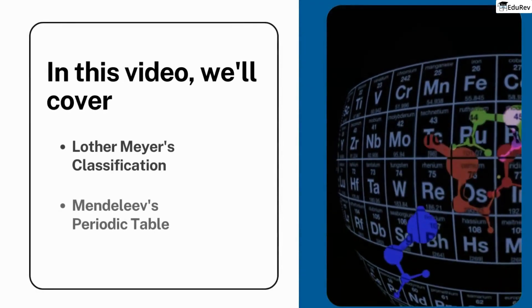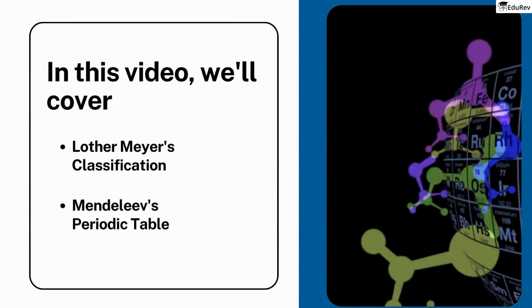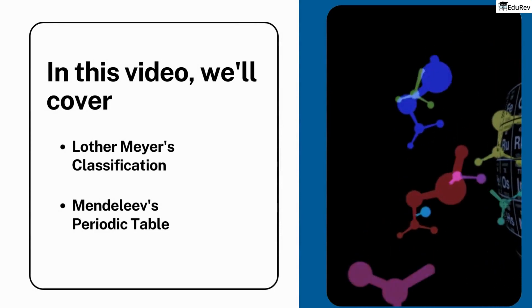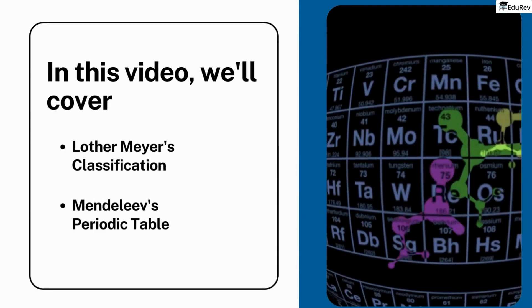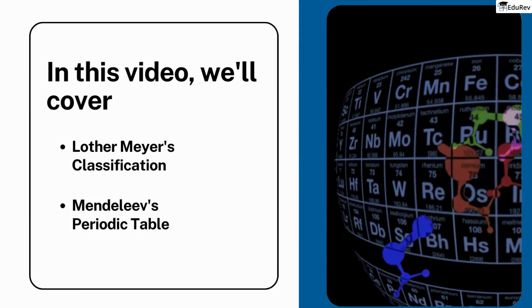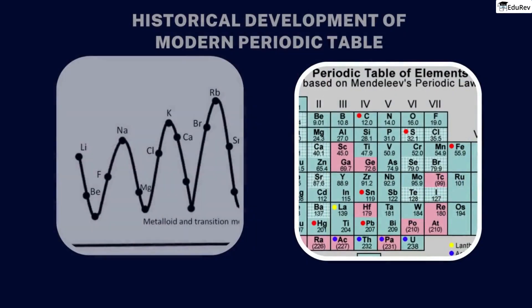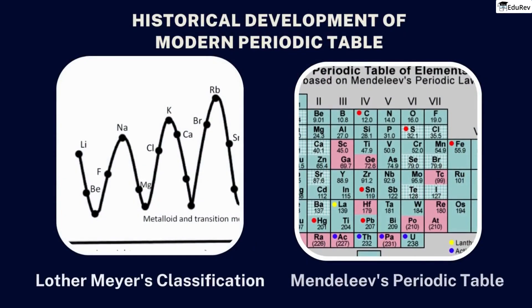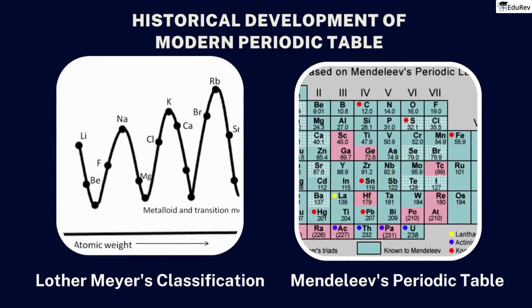In this video, we will delve into two more remarkable achievements: Lothar Meyer's classification and Dmitri Mendeleev's periodic table. These two pioneering scientists revolutionized our comprehension of the elements, laying the groundwork for modern chemistry as we know it.